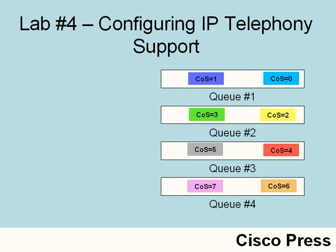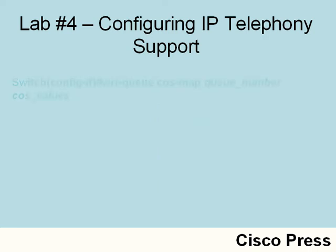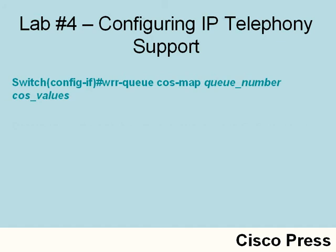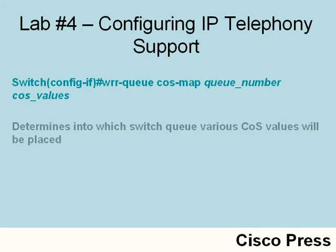In interface configuration mode on a Catalyst 3550, we can map COS values to queues using the command wrr-queue cos-map followed by the queue number (1 through 4), then one or more COS values to place in that queue.